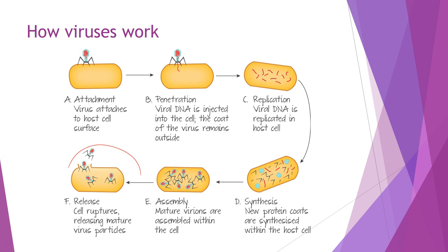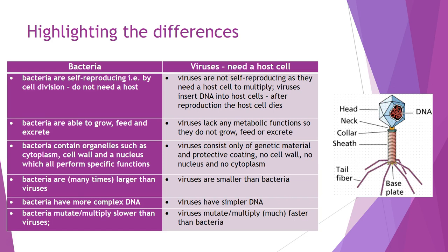The cell then ruptures and releases the new viral packets, which then start it all over again. Generally on maturation of the virus, the host cell is killed, and it releases far more viral particles than the initial one that infected it. If we look at the differences between bacteria and viruses: bacteria are self-reproducing — they do this by binary fission, expanding, dividing their DNA, building a new cell wall, and dividing. They grow, they feed, they excrete waste, they have organelles, different functions, and vacuoles.